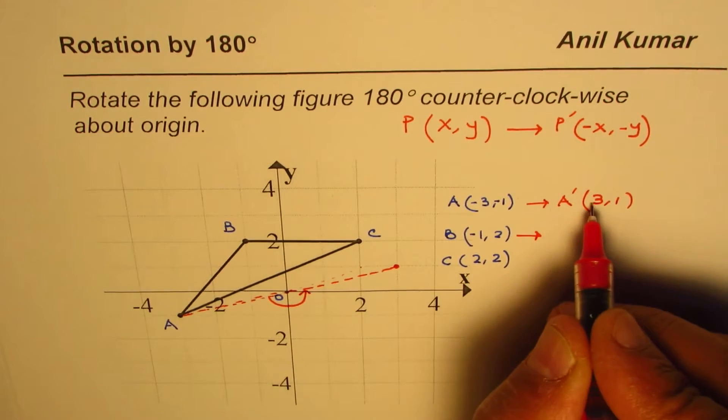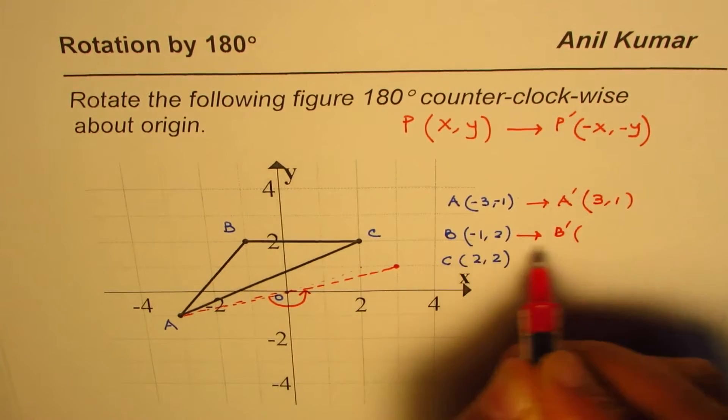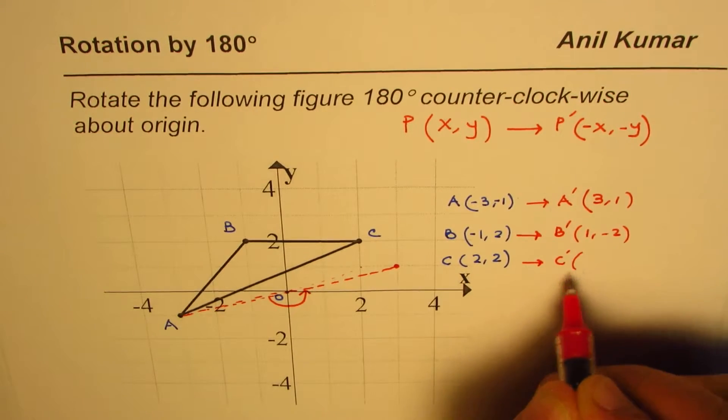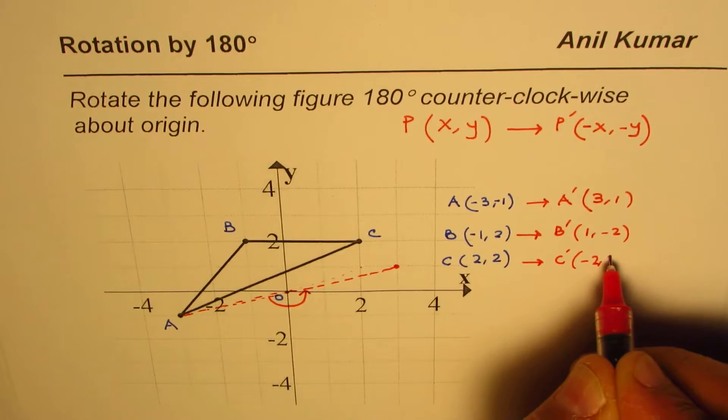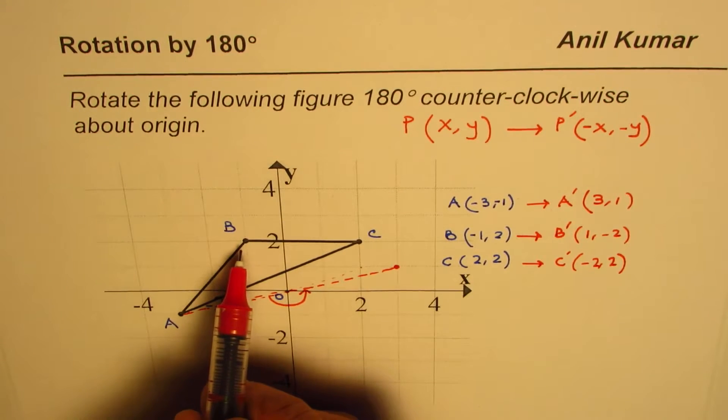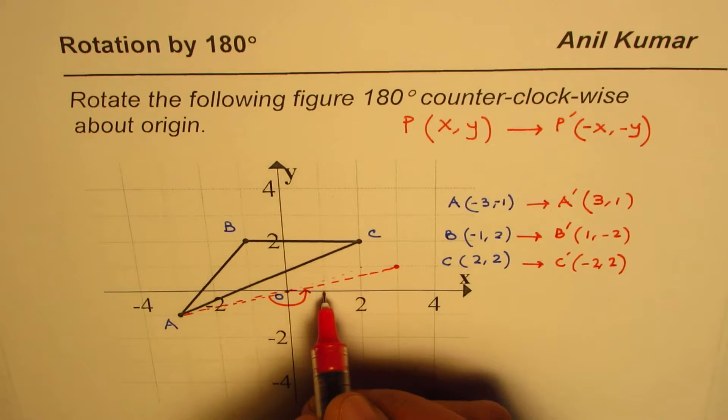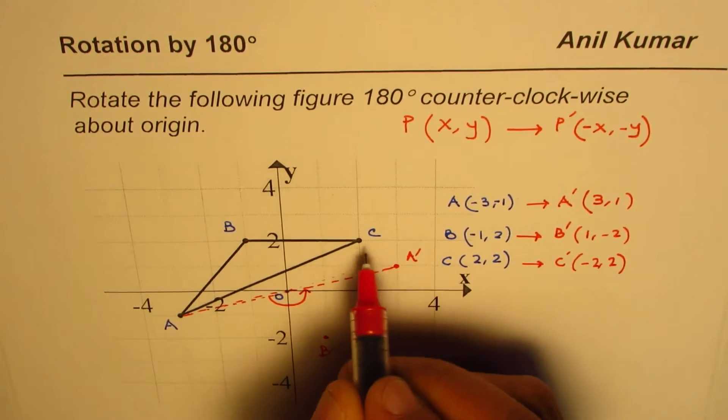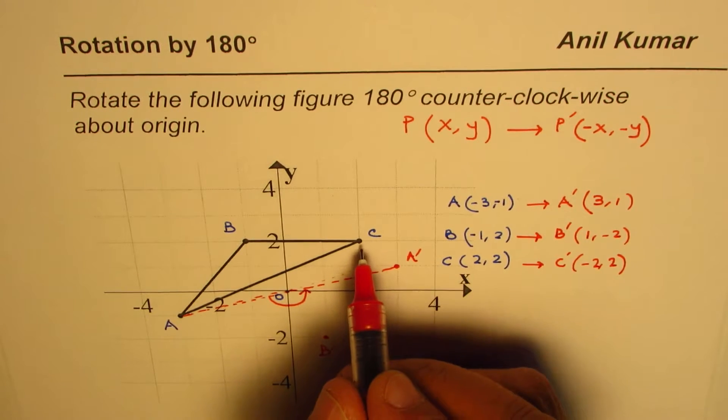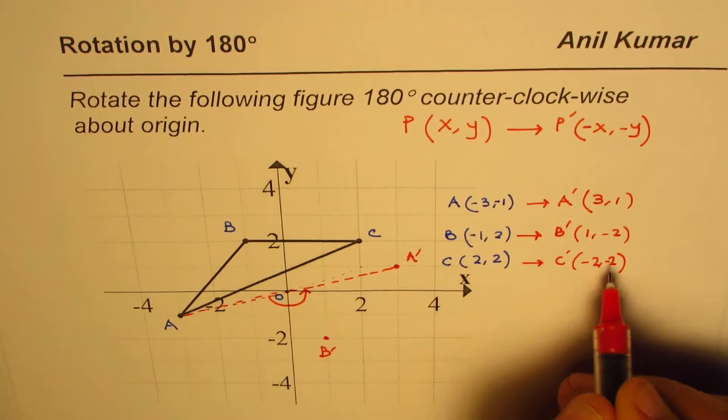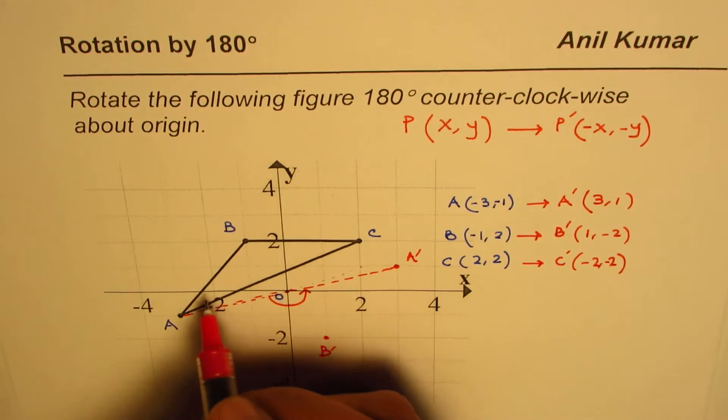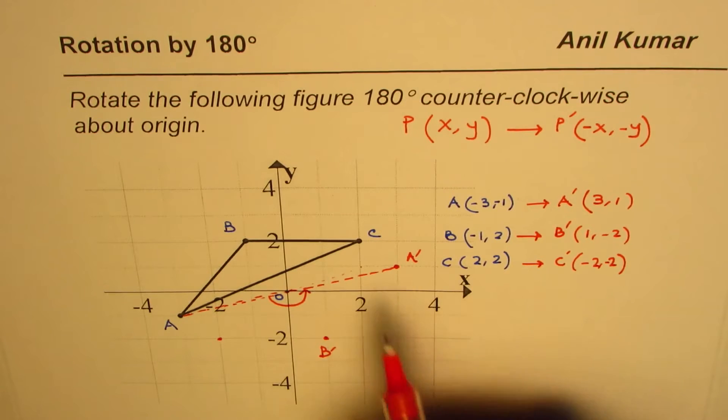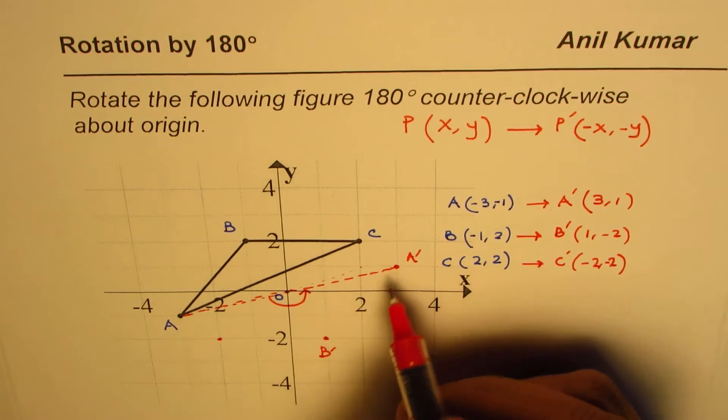Similarly, we can just rewrite the points of the images by changing the sign. So B' will be at (1, -2) and C' will be at (-2, -2). So B' is (1, -2), that is B'. This is A' for us. And C', which is the image of C, will be at (-2, -2).